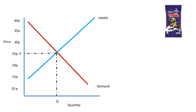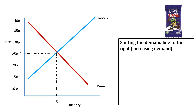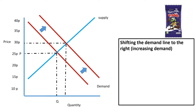That was just theory. Now we're going to look at what factors actually affect supply and demand in your market for the business you're going to be researching. We're starting by looking at the demand, shifting the demand line to the right — increasing demand. This means that the price and the quantity both increase. Your job is to pick out which factors are relevant to you and which are irrelevant.